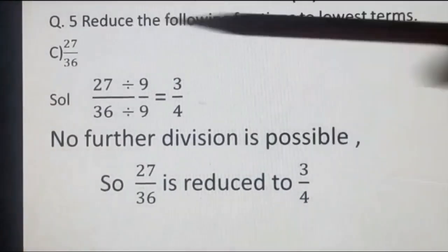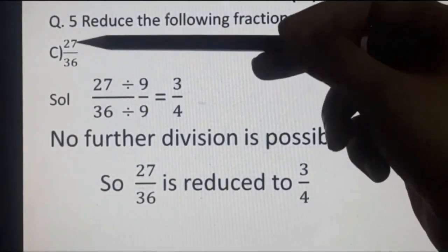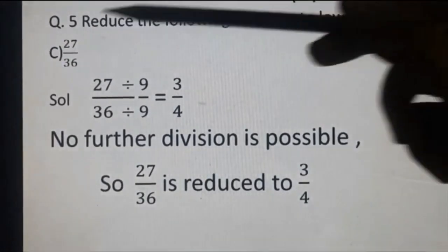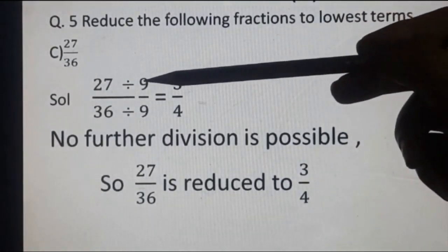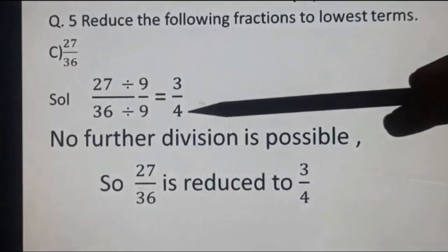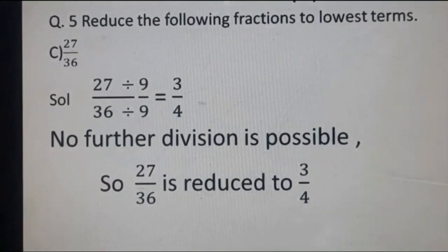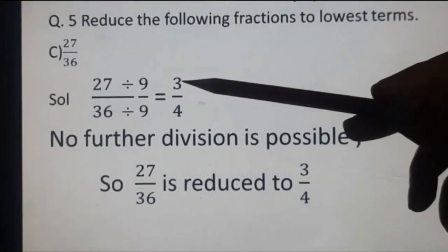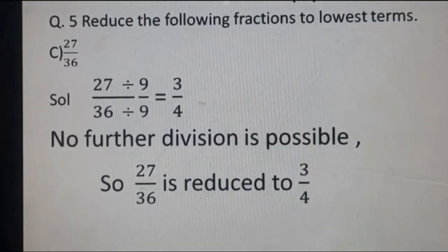Part C: 27 upon 36. Both 27 and 36 are divisible by 9 and by 3. We start dividing by 9: 27 divided by 9 equals 3 (since 9 threes are 27), and 36 divided by 9 equals 4 (since 9 fours are 36). The fraction becomes 3 upon 4. Since 3 is odd and 4 is even with no common factor, no further division is possible. So 27 upon 36 is reduced to 3 upon 4.